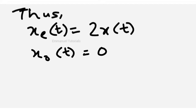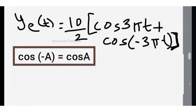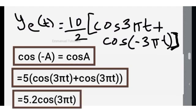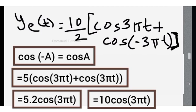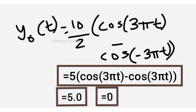Now we see another method using the formula cos(-a) = cos(a) directly. Since cos(-3πt) = cos(3πt), the even component becomes [10cos(3πt) + 10cos(3πt)] / 2 = 20cos(3πt)/2 = 10cos(3πt). For the odd part, cos(3πt) - cos(3πt) = 0, so the odd component is 0.